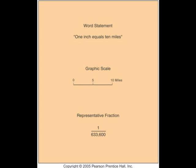The third form of map scale is the representative fraction, or RF. A representative fraction defines the ratio between the distance on the map and the distances on the Earth in fractional terms, such as 1 to 633,600.